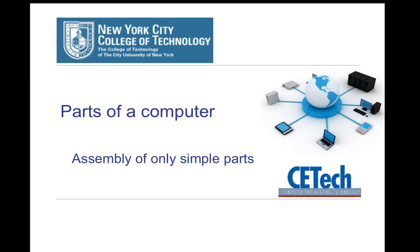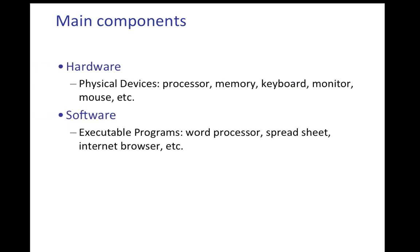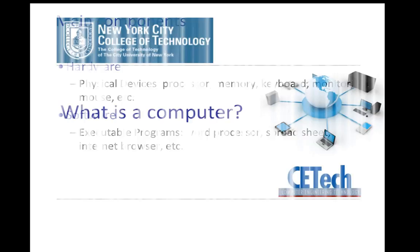In general, computers are an assembly of simple parts. The two main general components of a computer are hardware and software. Hardware refers to all the physical components, such as mouse, monitor, memory, microphone, speakers, etc. — all the gadgets that form your computer and the ones you attach to it. Software refers to all the programs or applications that you run on your computer: your video games, browser, and operating system. We will cover more details about hardware and software in the next video.